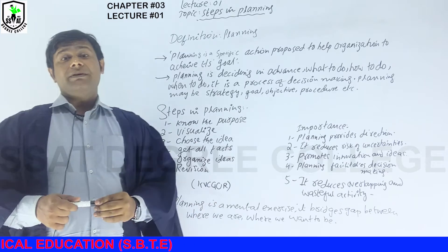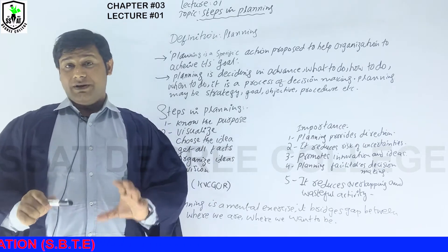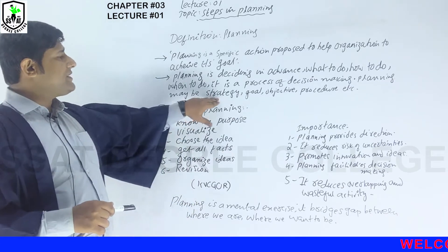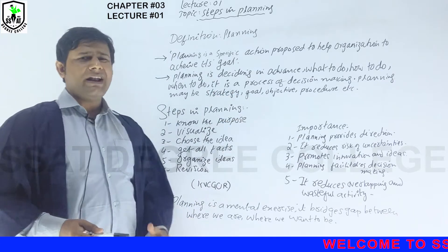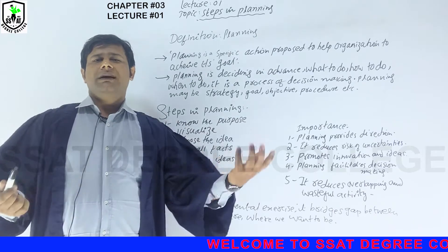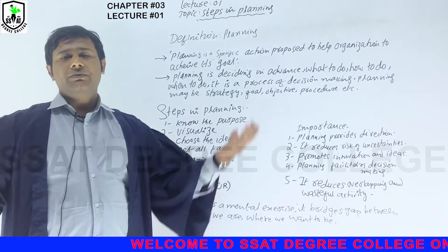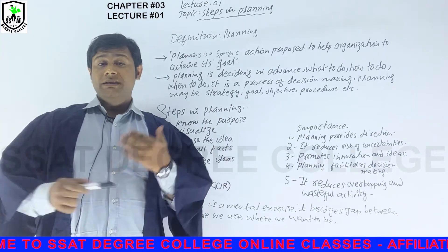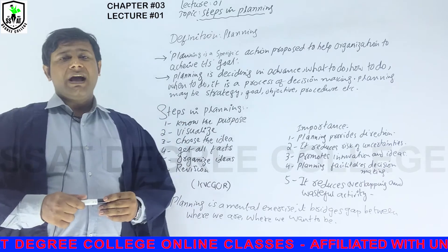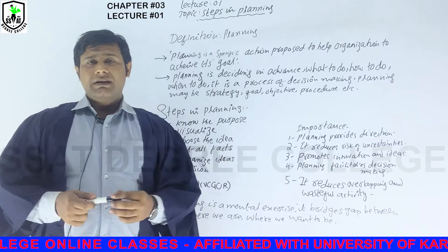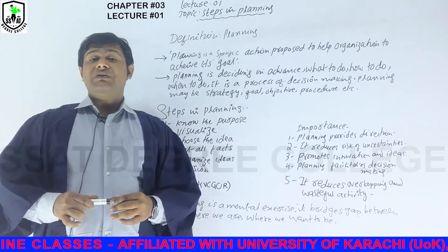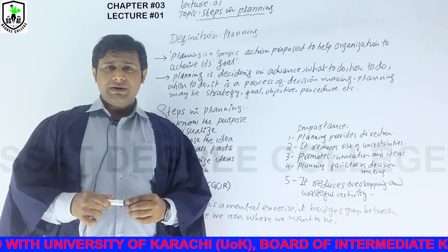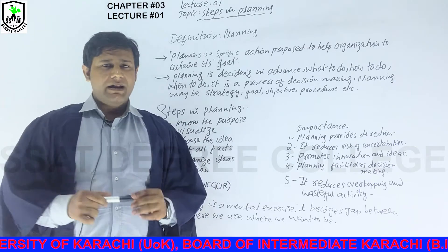Planning is a process of decision making — we have to decide first what to do, and we have to decide it earlier. Planning may be a strategy, goal, objective, or any sort of procedure. For example, I said I want to increase sale 10%; I have to plan about the risk factor and other things involved in this process throughout the year, meeting different persons in order to achieve that strategy or goal. So I have to plan in advance.